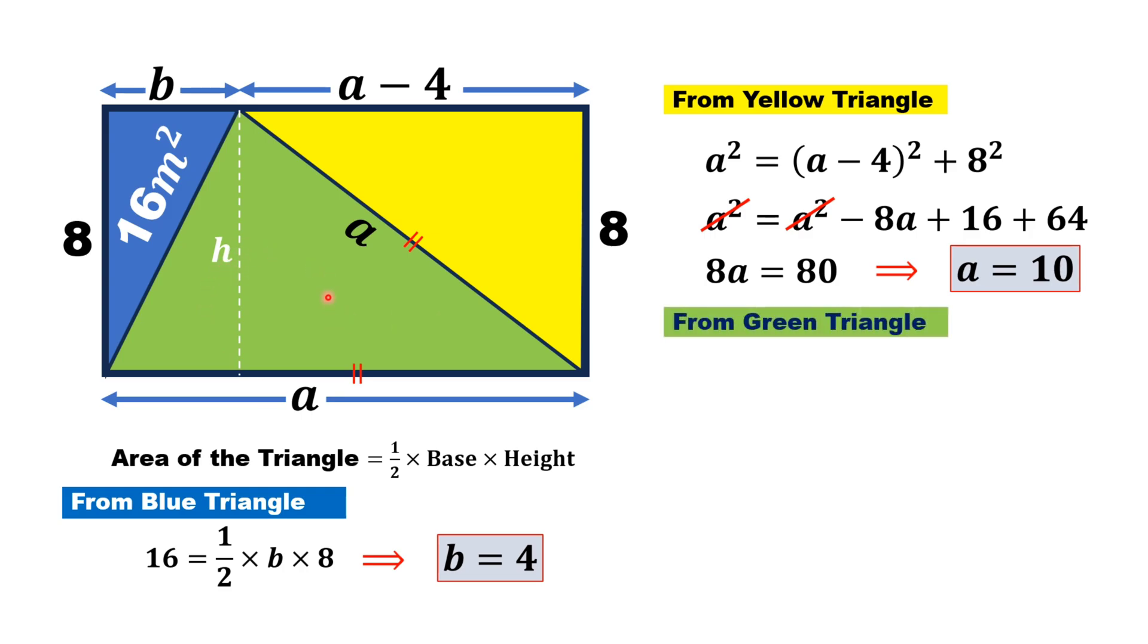From the green triangle, again using the area formula, the area of this green triangle equals half times A times H.